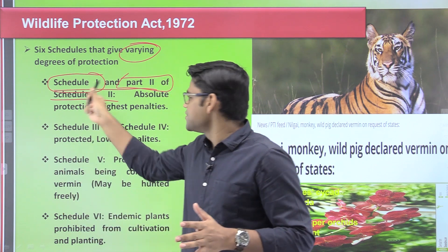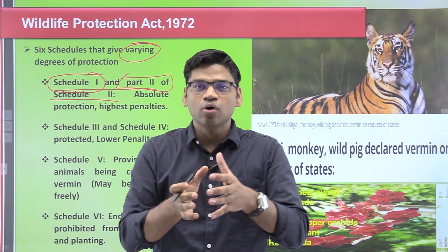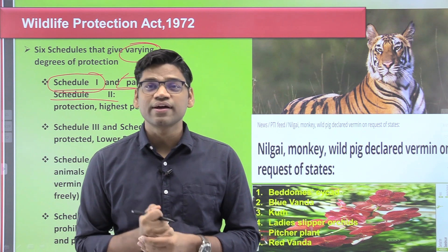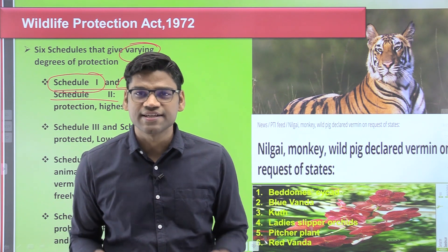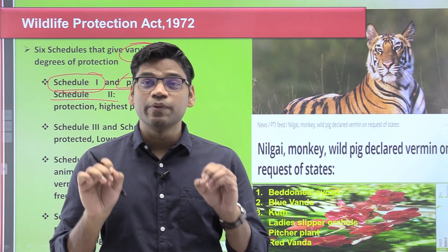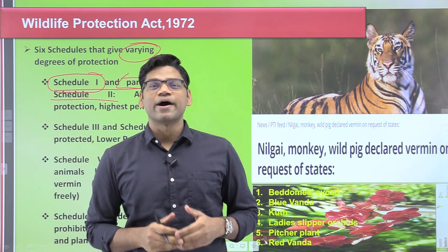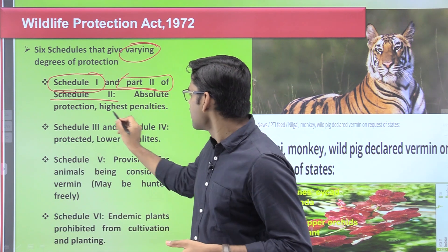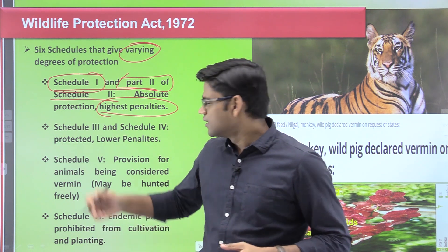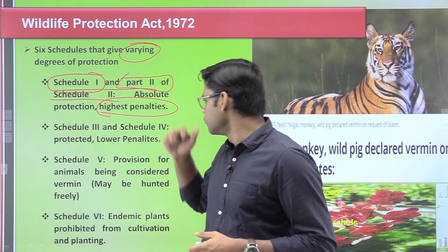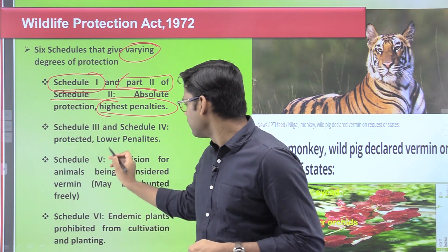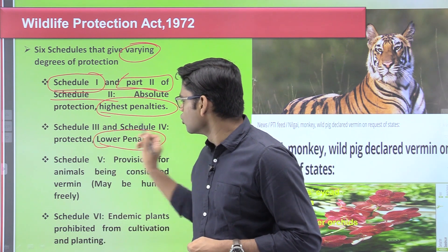Part 2 of Schedule 2 and Schedule 1 give absolute protection. Absolute protection means under no circumstances can these animals be hunted. It provides the absolute level of protection and the highest degree of penalty. On the other hand, Schedule 3 and Schedule 4 also provide protection, but the penalties are much lower.